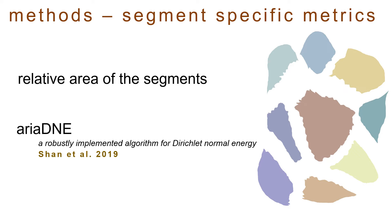Specifically, analyses indicate that the effects of differing triangle count, mesh representation, noise, smoothing, and boundary triangles are much more limited on Ariadne than on DNE. So this opens up a much larger sample for analyses.